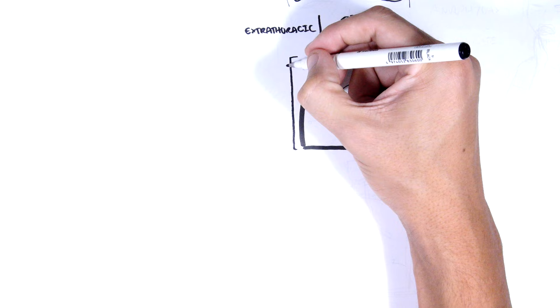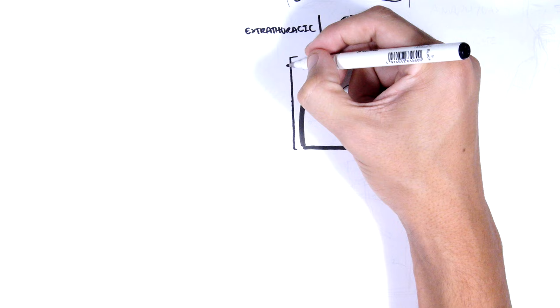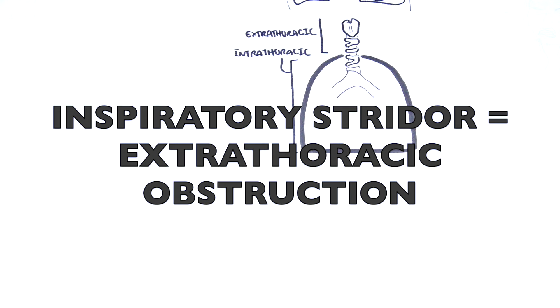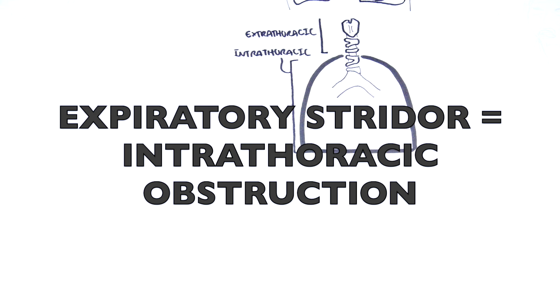When thinking about the pathophysiology of stridor, it's good to think about the respiratory tract in terms of extrathoracic and intrathoracic regions. As a general rule, inspiratory stridor occurs in the extrathoracic region and expiratory stridor occurs from obstruction in the intrathoracic region.